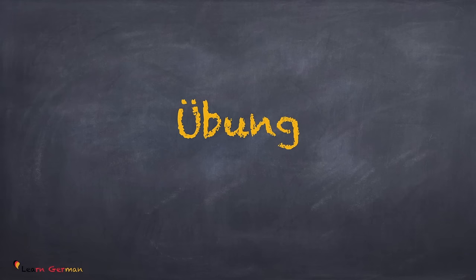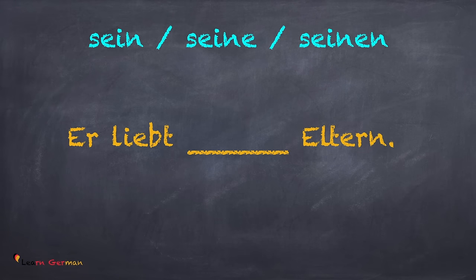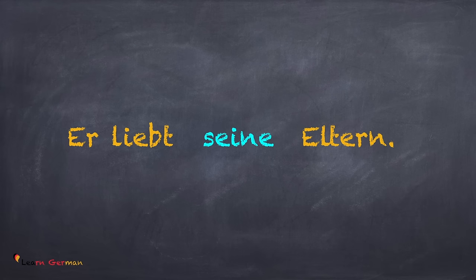Now let's do a small exercise. Übung. You will be given three choices of possessive pronouns and you have to choose the right one. The three options for the first sentence are sein, seine, and seinen. The correct answer is: Er liebt seine Eltern. Since Eltern is plural, the right possessive pronoun is seine.